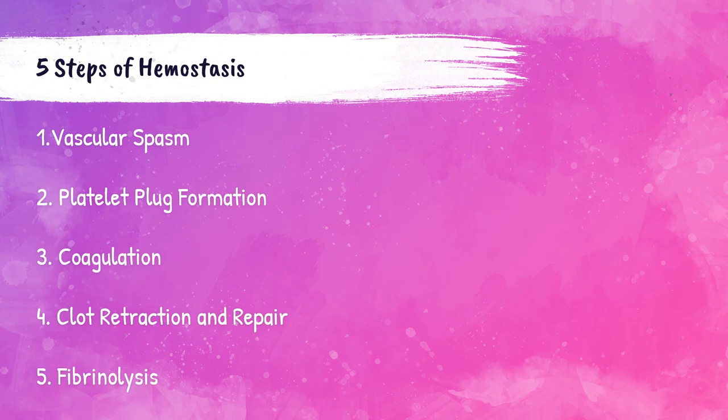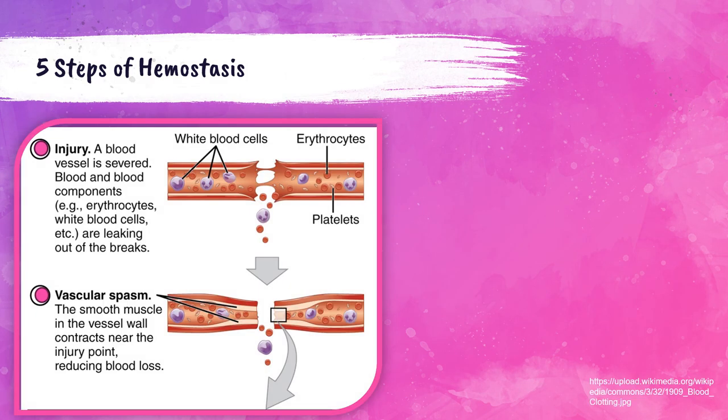Now onto the five steps of hemostasis. These are: vascular spasm, platelet plug formation, coagulation, clot retraction and repair, and lastly fibrinolysis. Here is a pictorial representation of what happens when an injury occurs — we'll go over each step in detail.